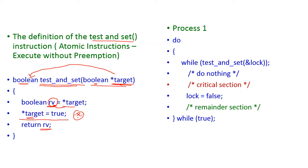Now let us see how process 1 will lock the critical region using test-and-set. The control enters into a do-while loop. Inside there is a while loop ended by a semicolon. When will the condition be true? If the target value is true, then this particular while will be true.